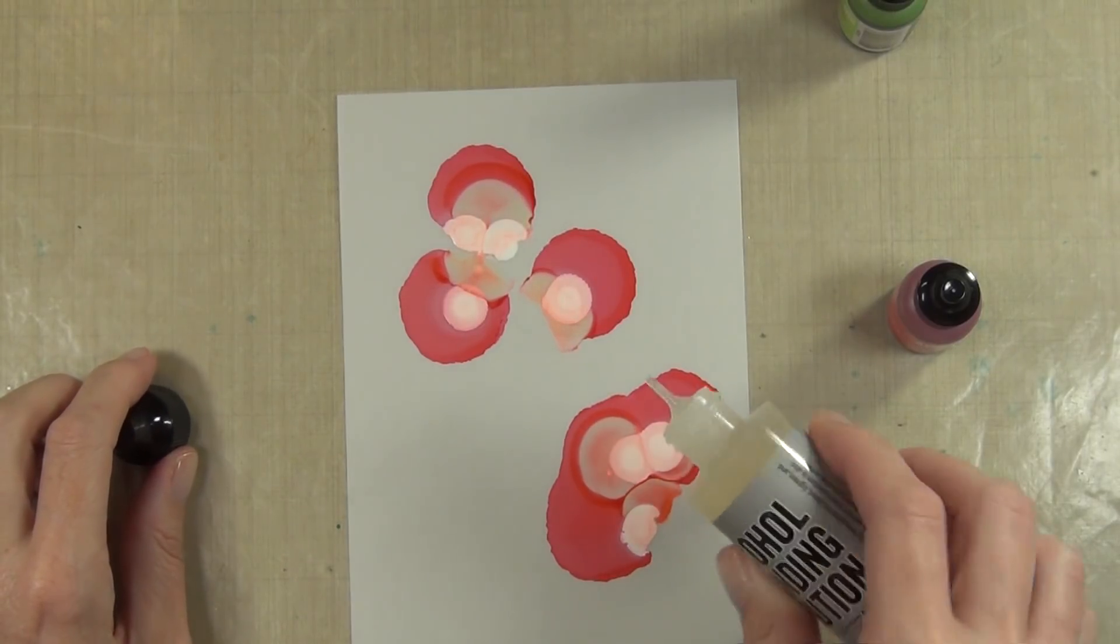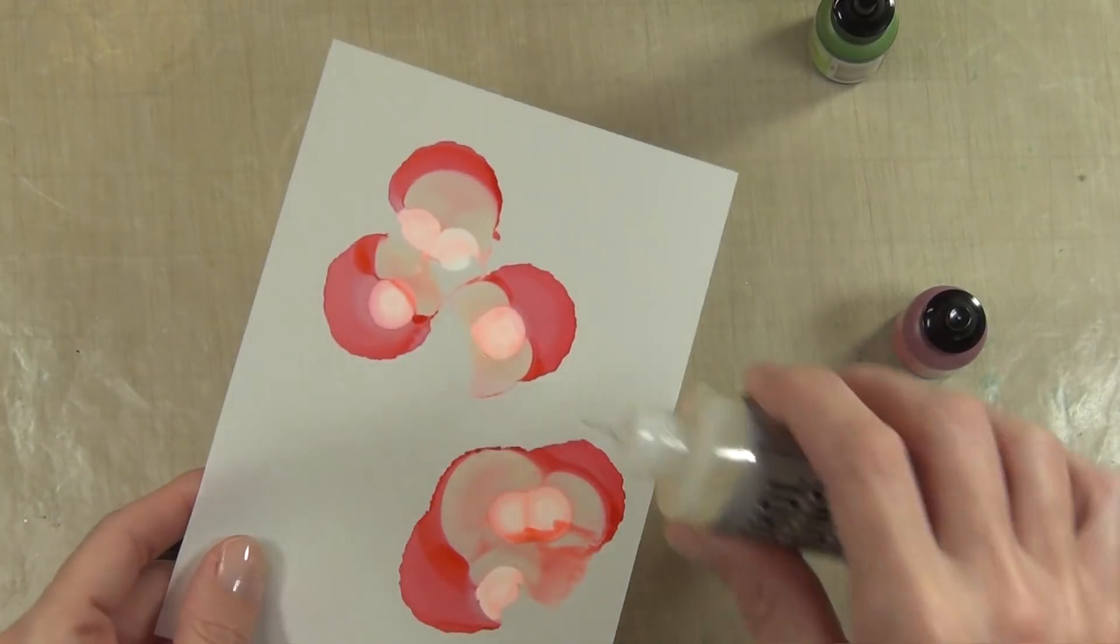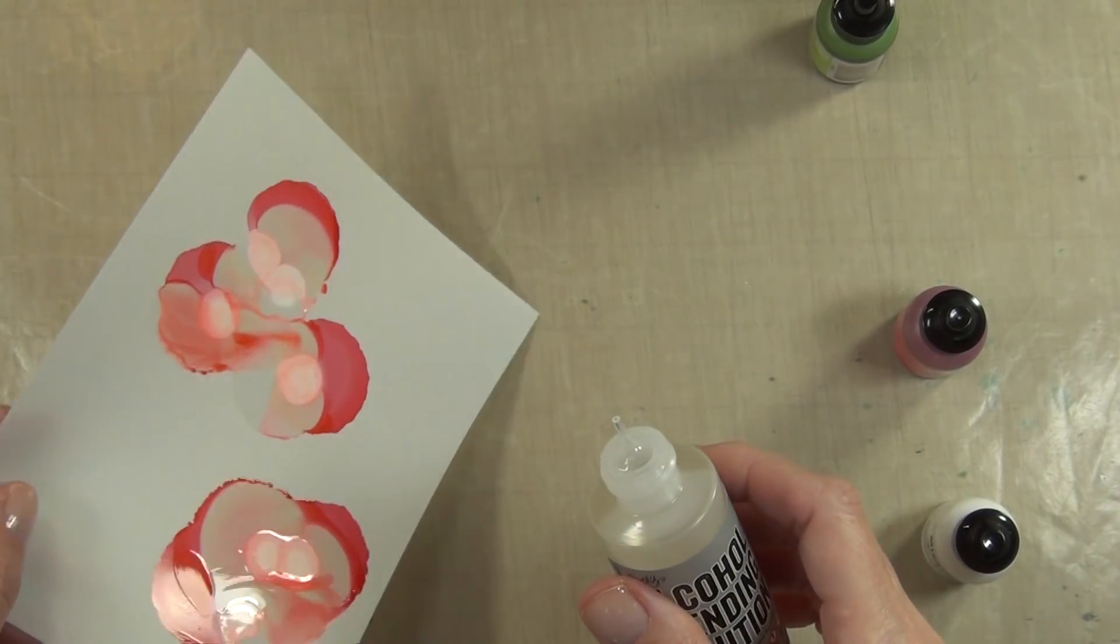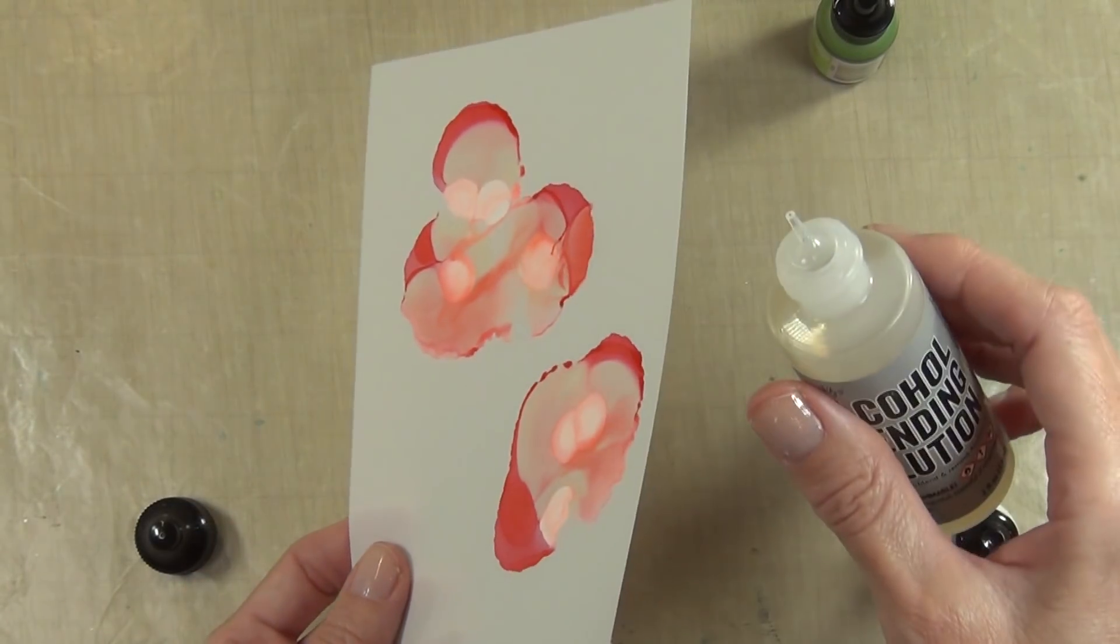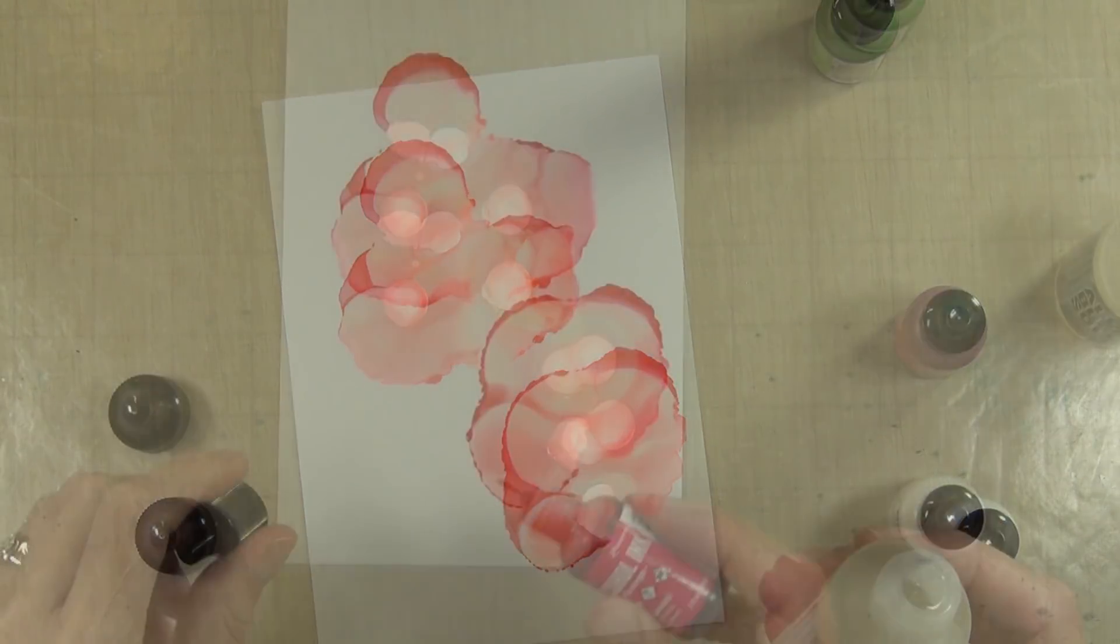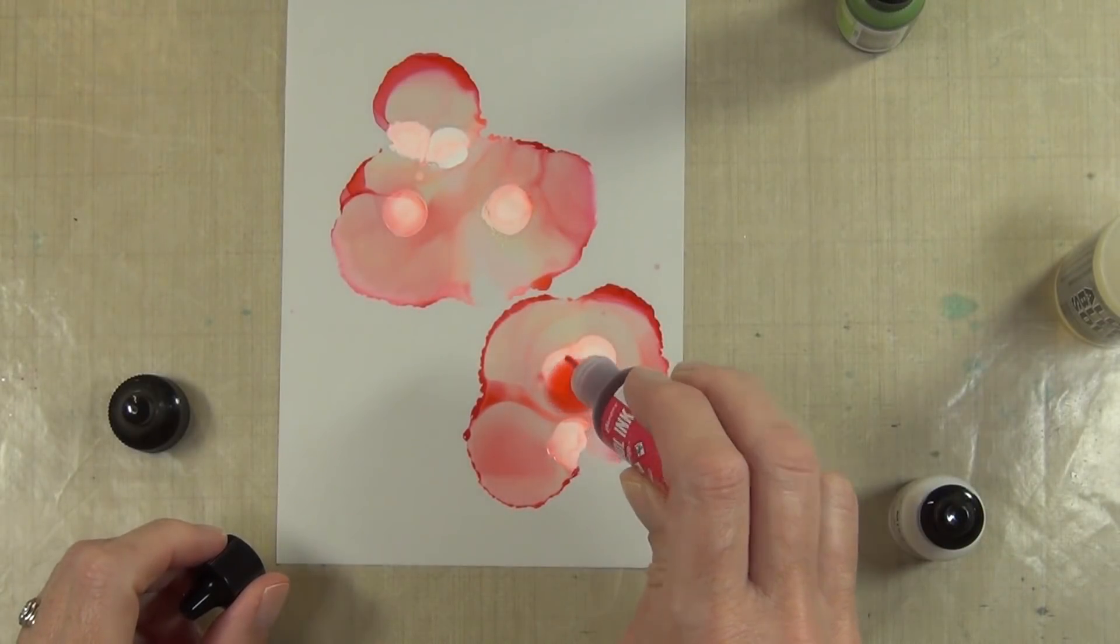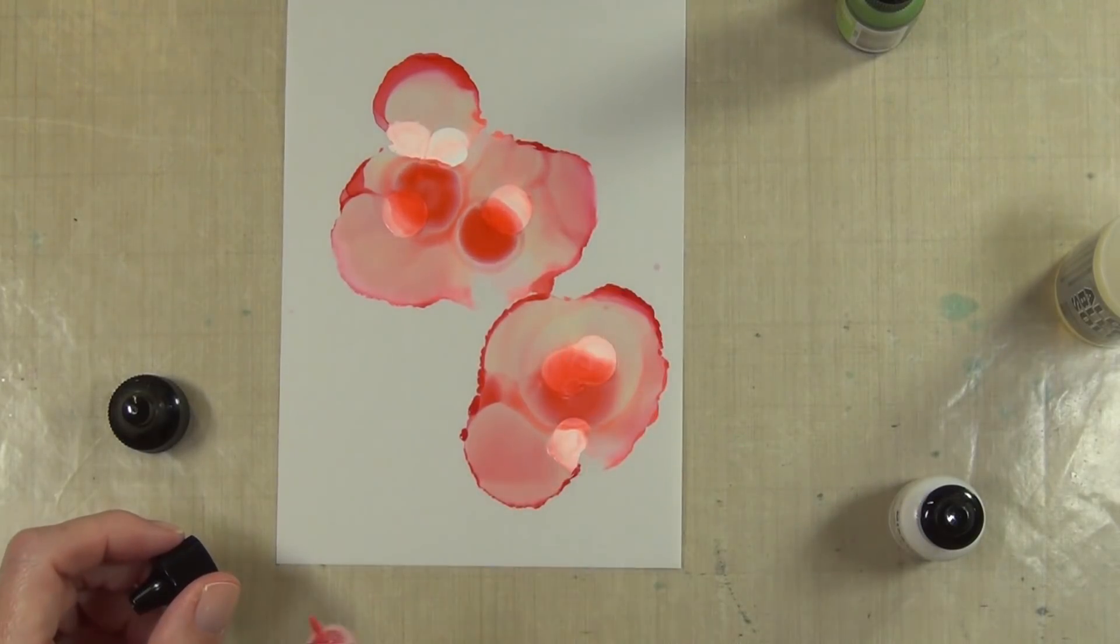I've got Flamingo, the pink color that I've used, and I've added some of the Mixative. This is the Snow Cap white Mixative. Then I'm coming in with the alcohol blending solution from Ranger. It's not going really well.